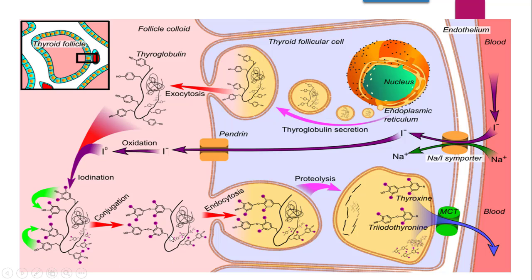Thyroxine (T4), which contains 4 iodines, and the structure with 3 iodines (T3) will be separated. This liberates thyroxine and triiodothyronine molecules through the mechanism of proteolysis. The efflux of T3 and T4 into the blood takes place through MCT — monocarboxylate transporters. Monocarboxylate transporters are responsible for secreting T3 and T4 into the blood.